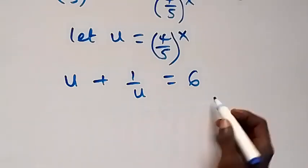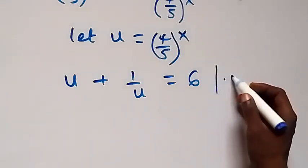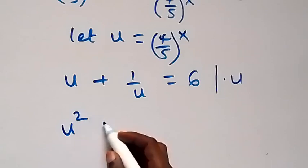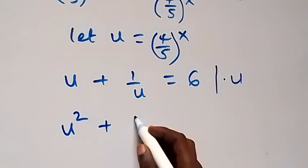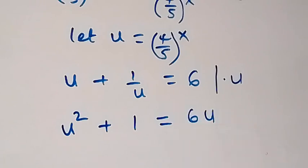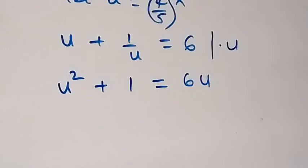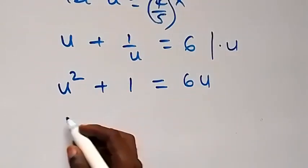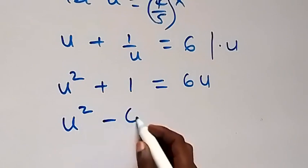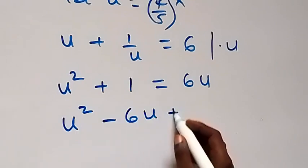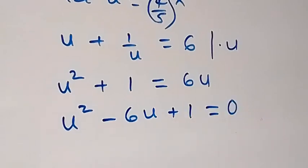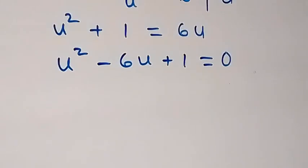We can multiply through by u to clear the fraction here. Then this becomes u squared plus 1 equals to 6u. Bringing everything to one side, this gives us u squared minus 6u plus 1 equals to 0.